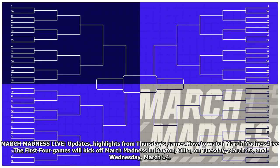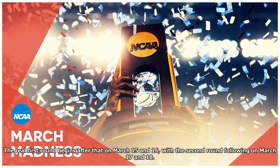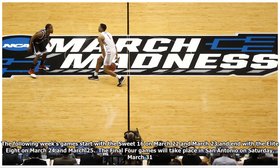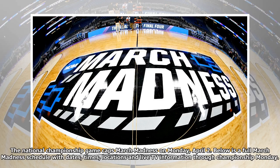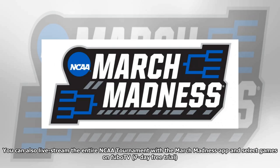March Madness Live updates and highlights from Thursday's games. How to watch March Madness live: The first four games will kick off March Madness in Dayton, Ohio on Tuesday March 13 and Wednesday March 14. The first round begins on March 15 and 16, with the second round following on March 17 and 18. The Sweet 16 runs March 22 and 23, the Elite Eight on March 24 and 25. The Final Four takes place in San Antonio on Saturday March 31, and the National Championship caps March Madness on Monday April 2. You can live stream the entire NCAA Tournament with the March Madness app and select games on FuboTV, 7-day free trial.